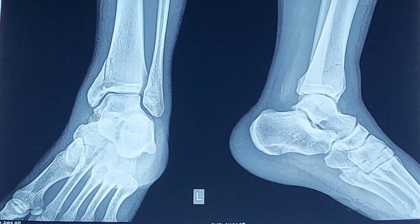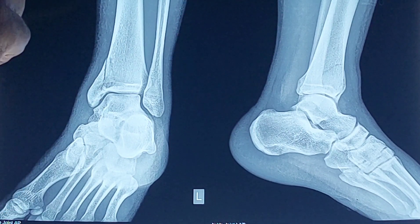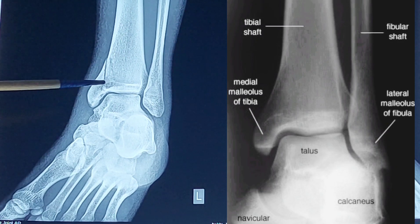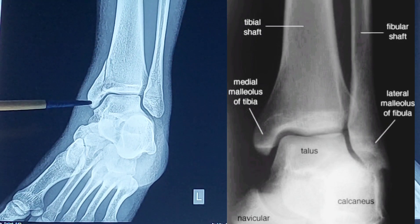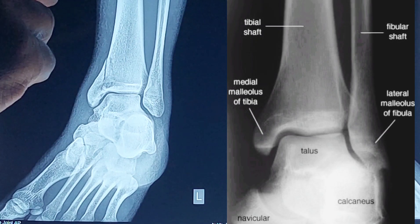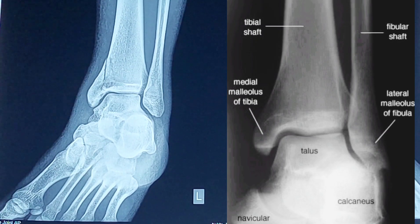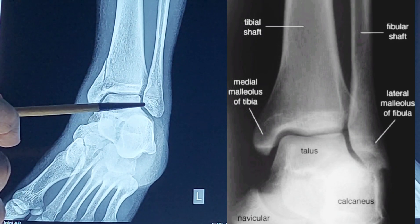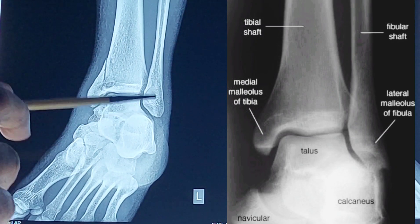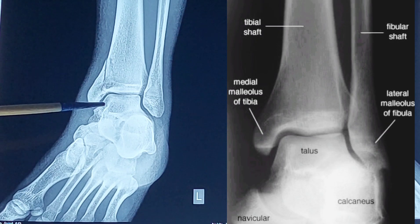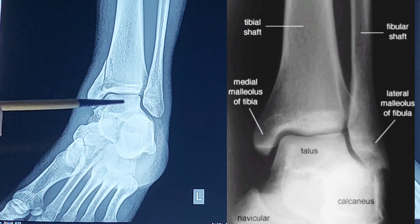What can we see in this X-ray film? Here we can see this is the lower end of the tibia, and this is a projection from the lower end called the medial malleolus. This is the fibula, the lateral bone of the leg, and this projection from the lower end of the fibula is called the lateral malleolus. Here is the body of the talus.